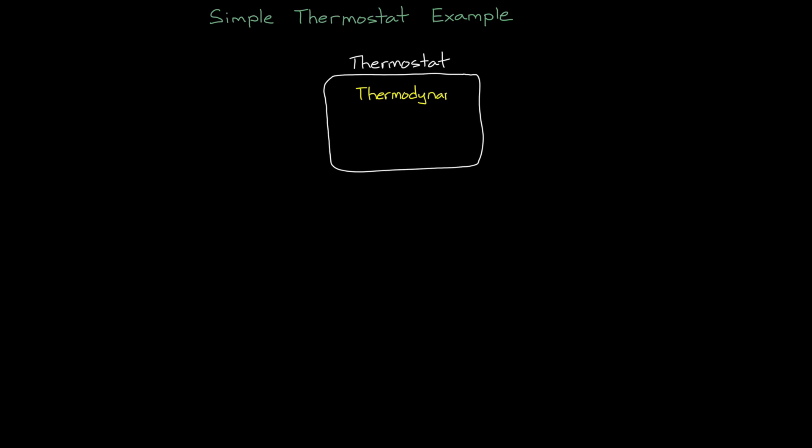Let's describe online system identification using the example of a thermostat that uses a thermodynamic model of a house to best control the temperature. If the thermostat isn't provided a model, it has to build one based on the available information.